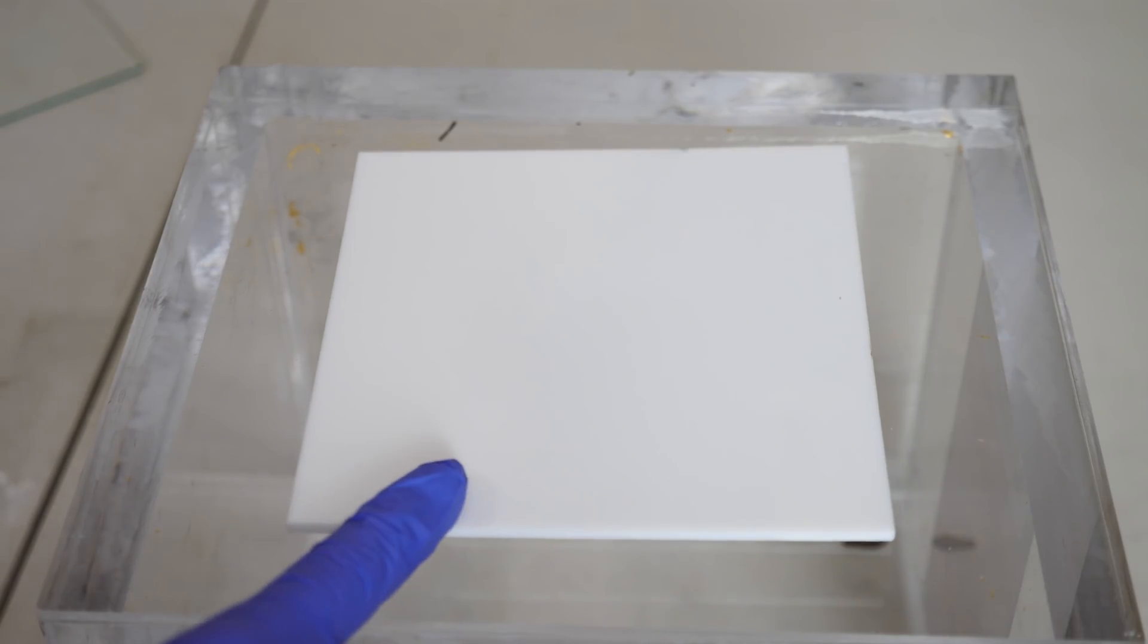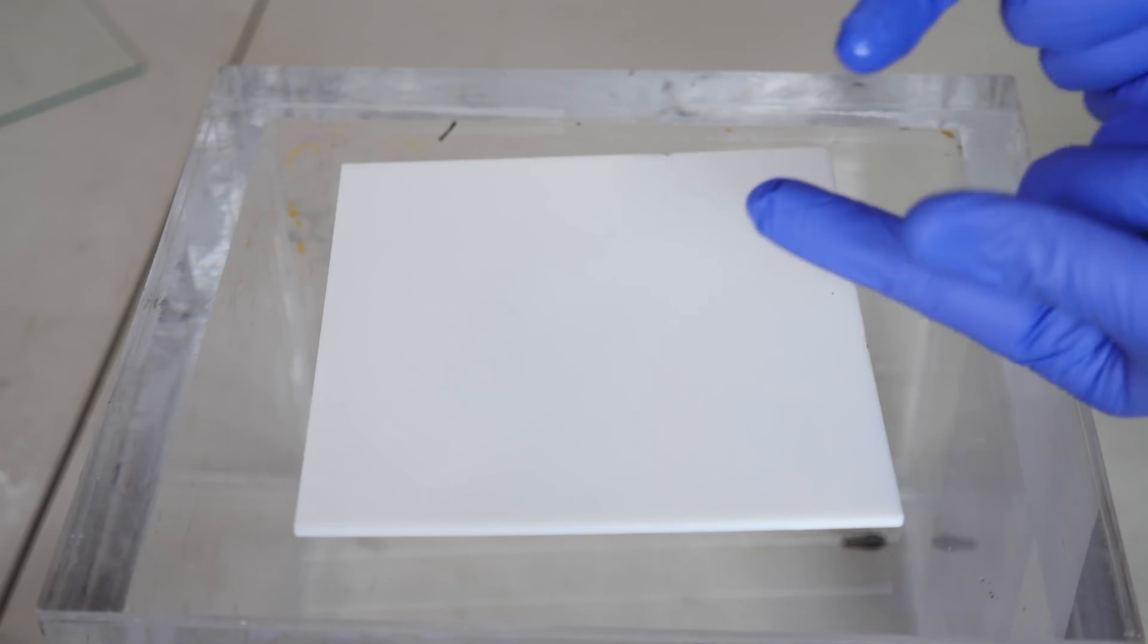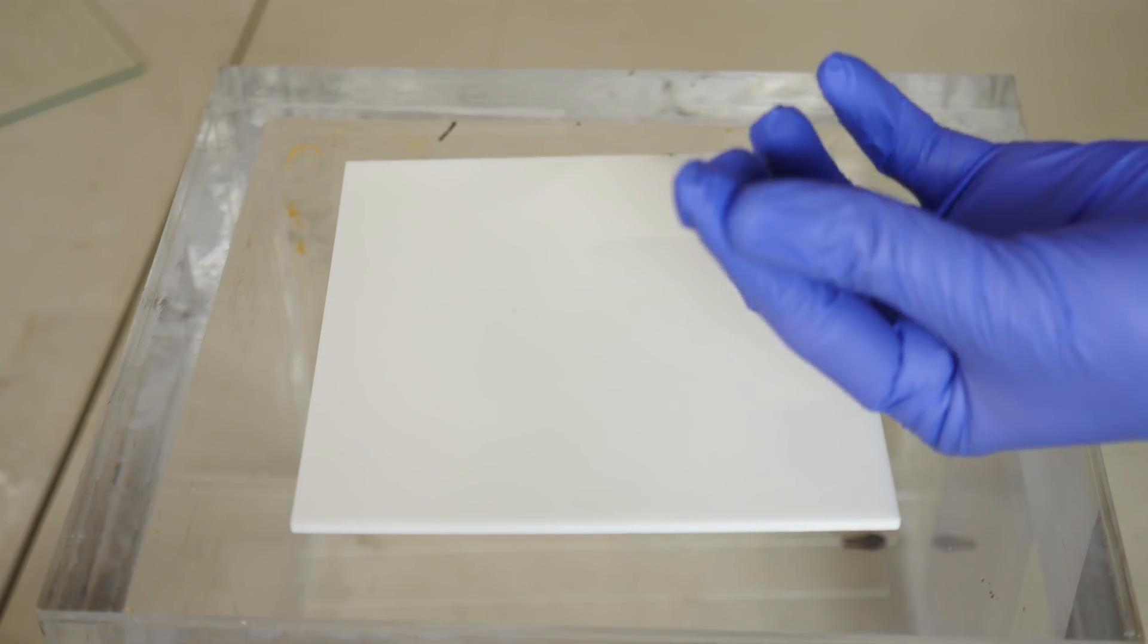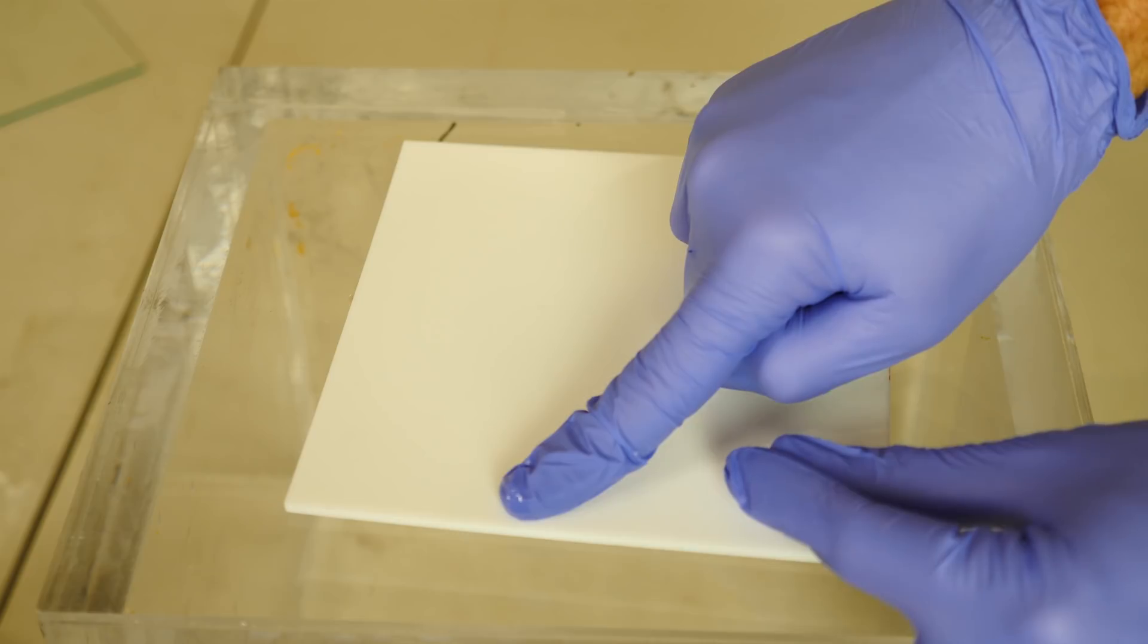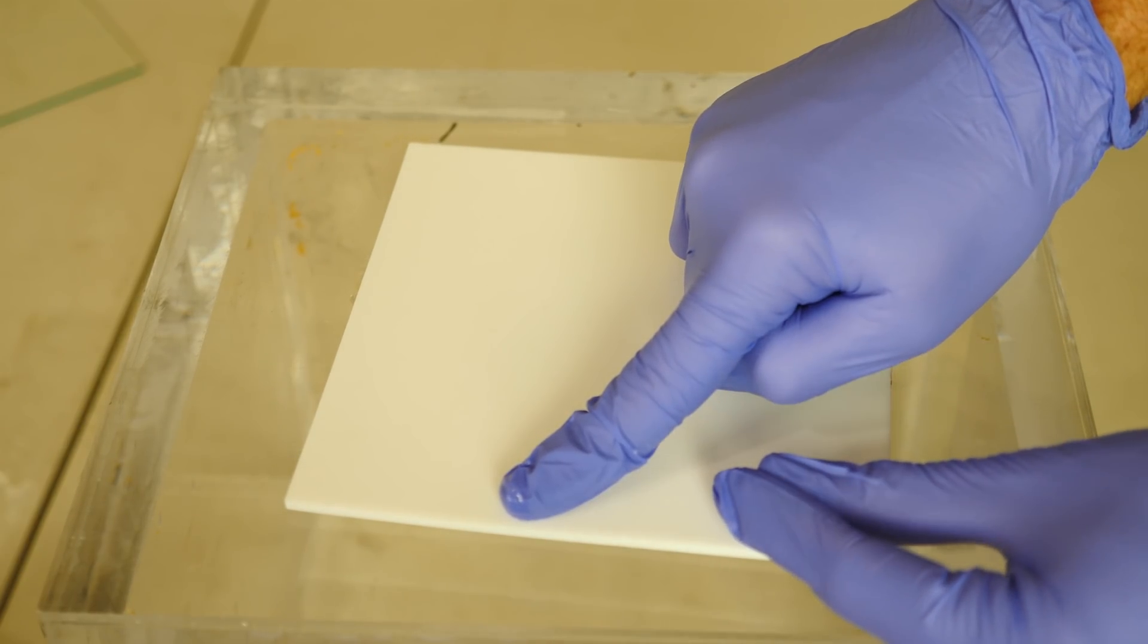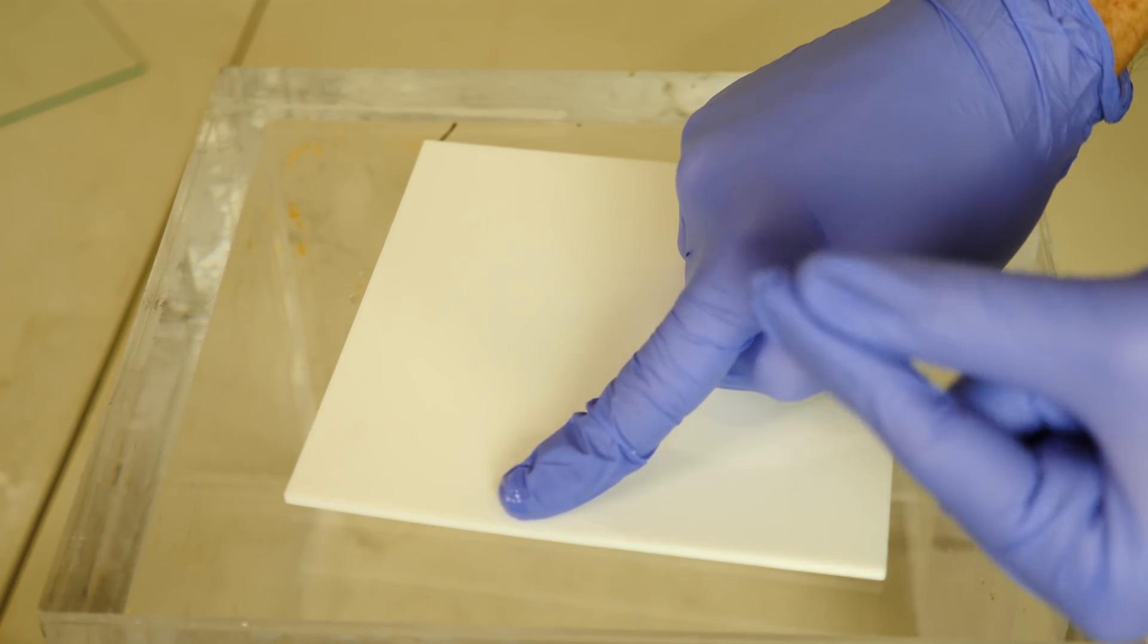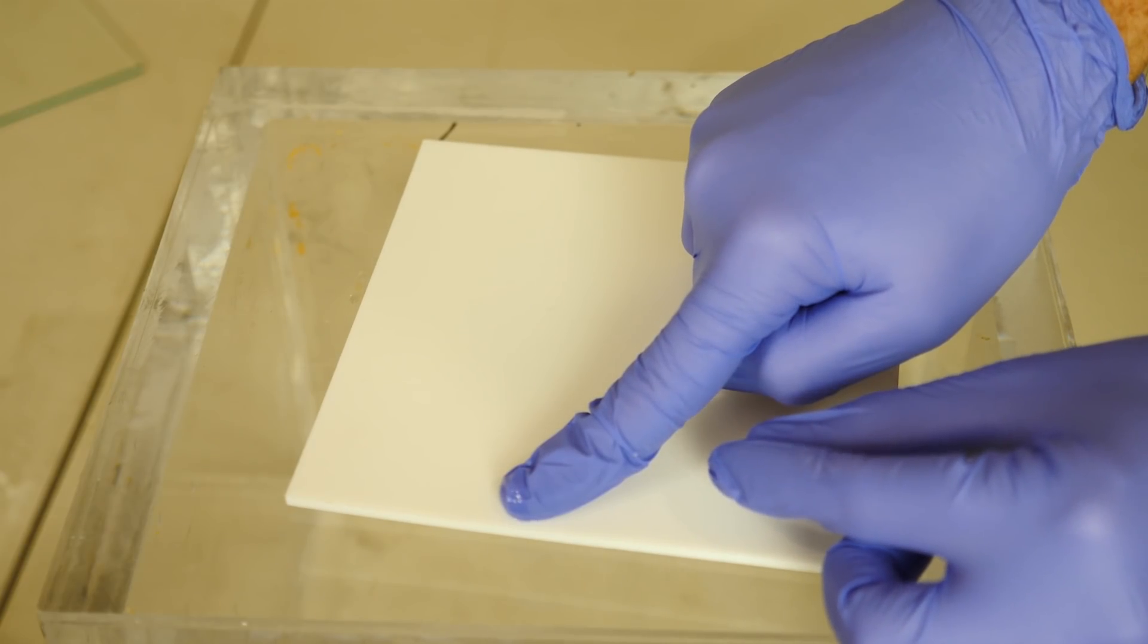So let's see if I can glue my finger to the Teflon. I have some here for a control. Let's see if I can glue my fingers together and I'll stick one here. We're going to leave it here. So I have super glue in between my fingers here and on the Teflon here.